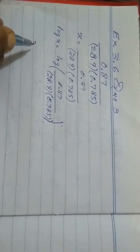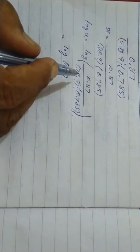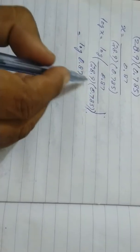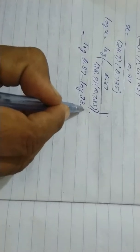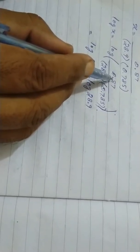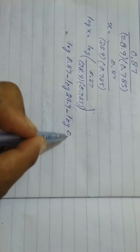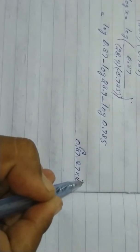Now when we apply the log to this expression, we get log 0.87. These two values are dividing 0.87, so when we apply the log we get minus log 28.9. Some students are confused because this is multiplication, but the whole value is dividing 0.87, so we use minus log 0.785.